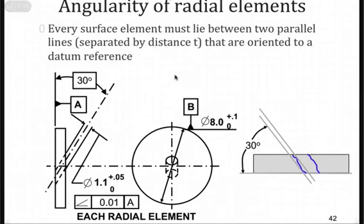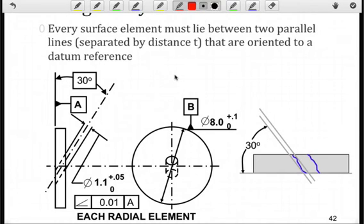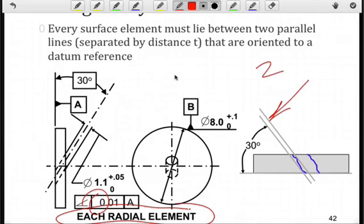We can also look at the surface of this hole and control the radial elements — in other words, the longitudinal elements — as we saw before using the notation that each radial element on the surface of the hole is treated independently. Note there's no diameter symbol here, so we know we're dealing with the surface and not the axis. The shape of the tolerance zone is two lines maintained at 30 degrees with a separation of 0.01, representing the width of the tolerance zone. We go around the surface and determine whether the surface is within the tolerance zone.